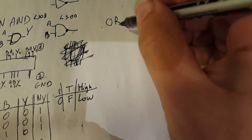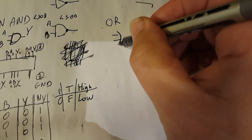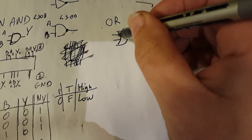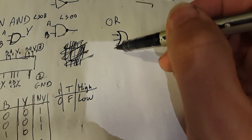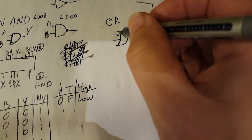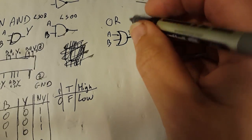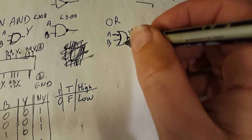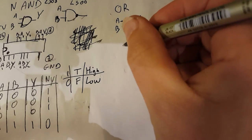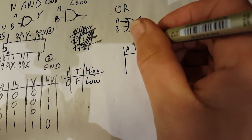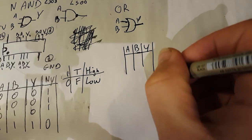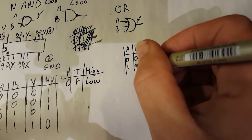Then you have the OR gate. It's represented with a curved shape — if you find it confusing, think of it as the beginning of an O. The AND gate is straight like an A, and the OR gate is rounded. It works the same way: you have inputs A and B and output Y. An OR gate waits for one or the other to be high to output high.